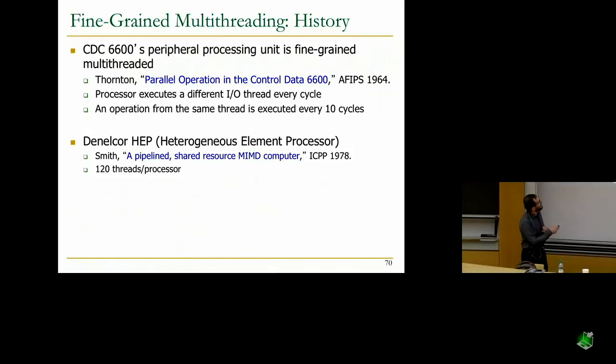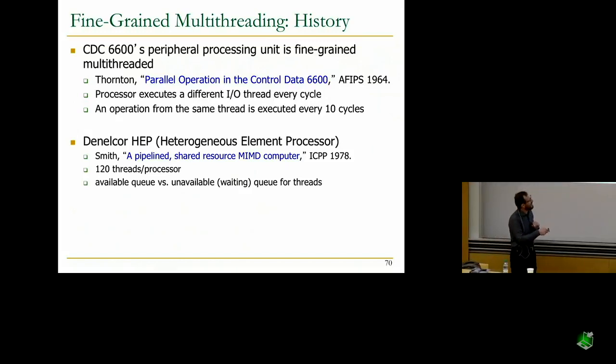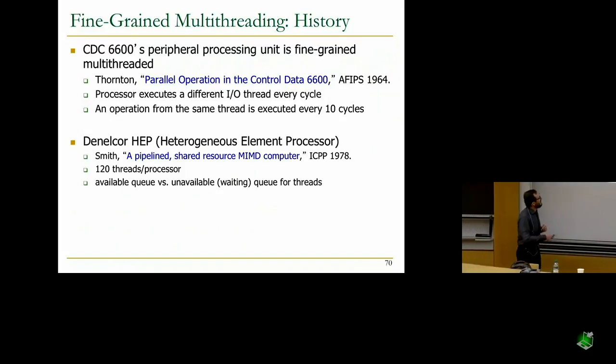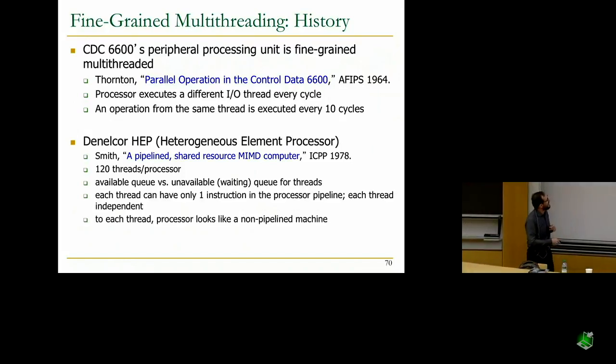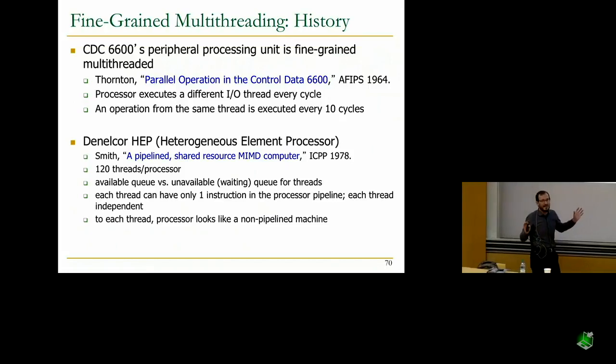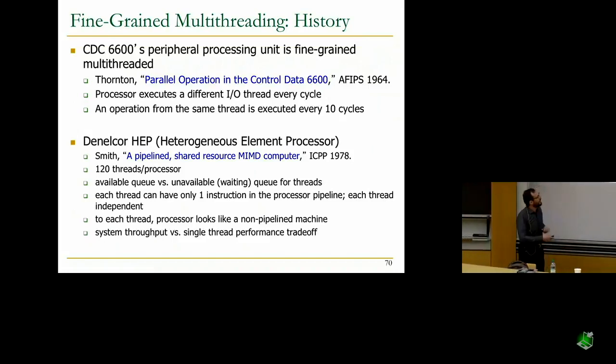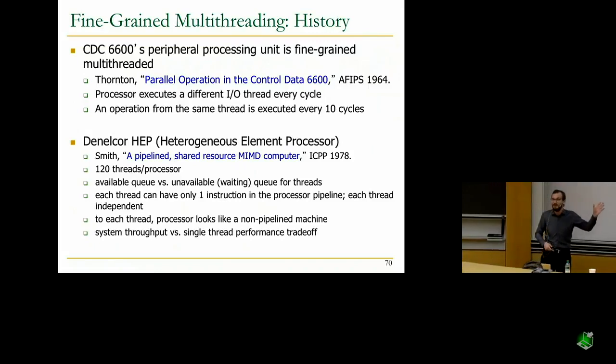There are 120 threads per processor. In this case, 120 thread contexts you can house in a single processor. GPUs are going to be very similar to this. You have queues for available threads and unavailable threads. Some threads get out of the pipeline because they're waiting for data. Each thread can have only one instruction in the processor pipeline. Each thread is independent. To each thread, the processor just looks like a non-pipelined machine. You're fetching an instruction every n cycles. There's a huge trade-off between system throughput versus single thread performance. If you have only a single thread to execute, this is not going to buy you any performance.